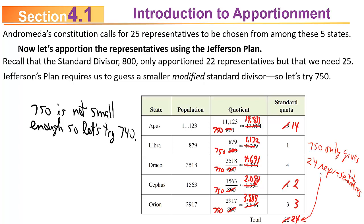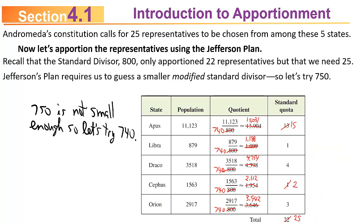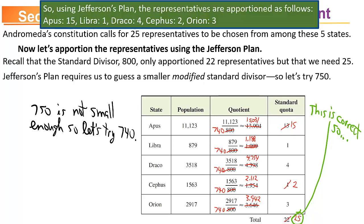We're one short, so let's try 740 instead of 750. Dividing by 740: Apis gives 15.031 (rounds to 15), Libra gives 1.188 (rounds to 1), Draco gives 4.754 (rounds to 4), Cephas gives 2.112 (rounds to 2), and Orion gives 3.942 (rounds to 3). Adding those up gives exactly 25. So by the Jefferson plan, the representatives are: Apis 15, Libra 1, Draco 4, Cephas 2, and Orion 3.